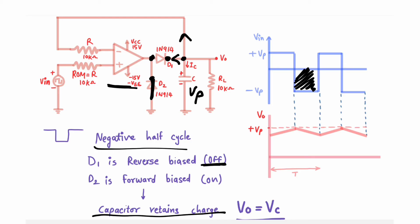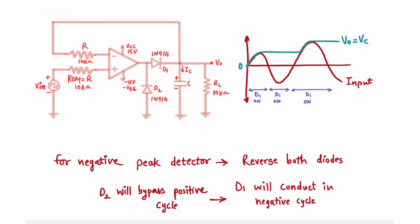The output will still be Vp. Ideally you should get a constant output, but the capacitor will discharge a little bit, and again in the positive cycle it will charge to the maximum value and discharge a little bit — so you will get ripples in your output, but ideally it should be constant. So this circuit is measuring the positive peak of your input signal.